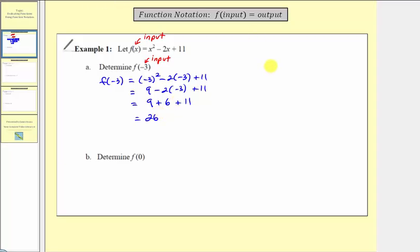We found that f(-3) equals 26, which means when the input is negative three, the output is 26, or we could say the function value is 26. If we were asked to write this information as an ordered pair, the ordered pair would be negative three comma 26. We always have the input as the first value, comma the output as the second value as an ordered pair.